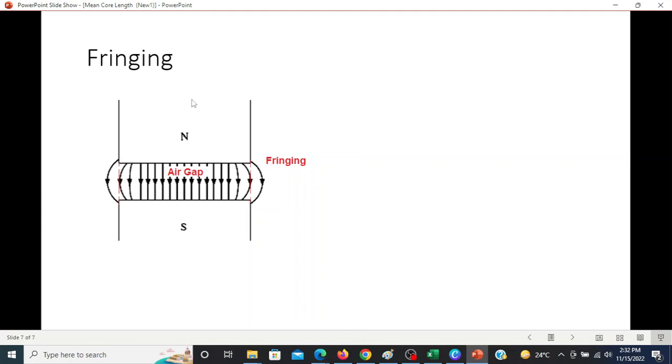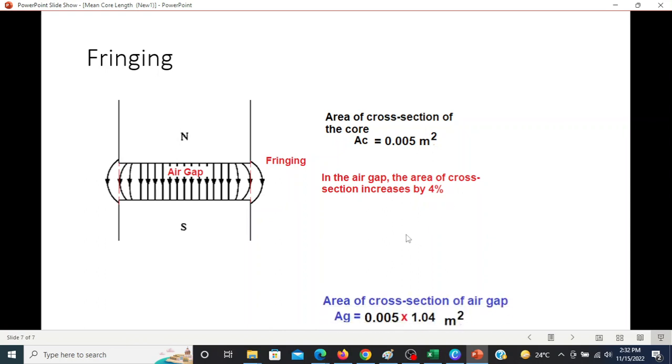Okay, fringing. When we have air gap in our core, when air gap is given, what happens is magnetic flux lines spread outside. Our area increases. The area of cross-section of the core given was 0.05 meter square. In the air gap, the area of cross-section increases by 4%. So the increase is 4%, which means 4 divided by 100, which is 0.04. So we add one, multiply our original area by 1.04 to get the new area.